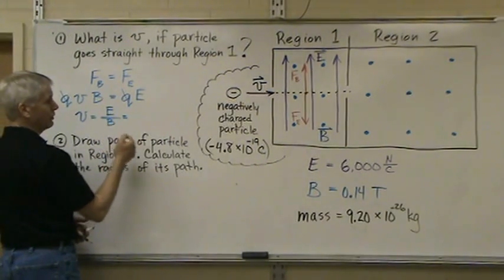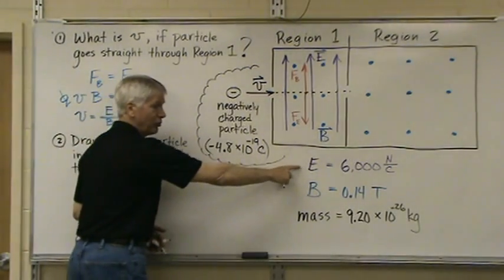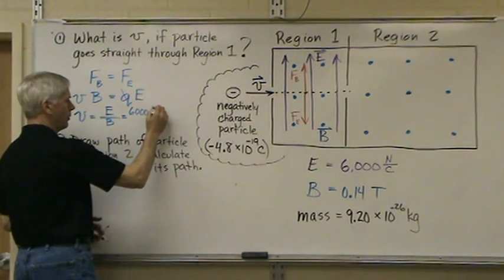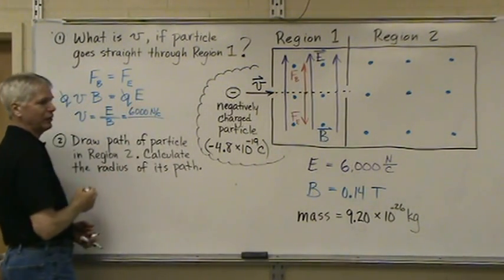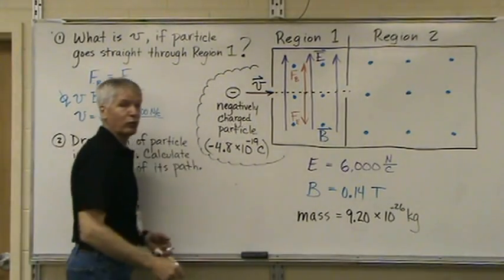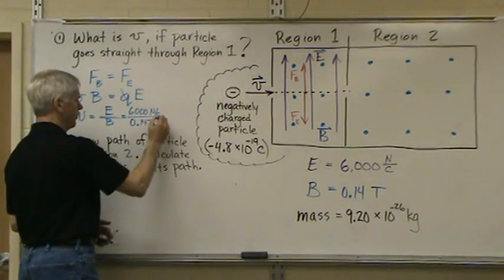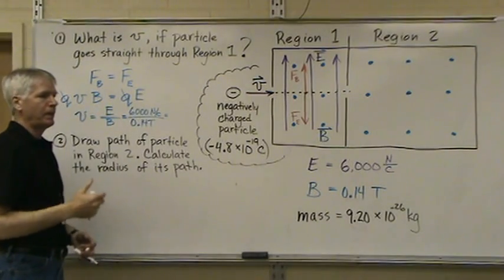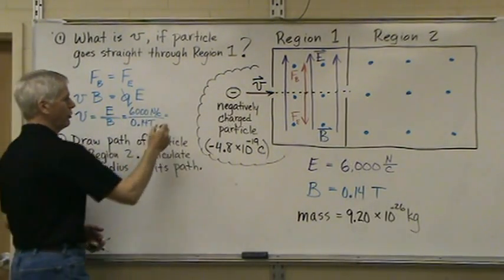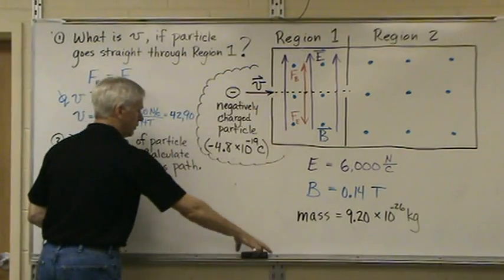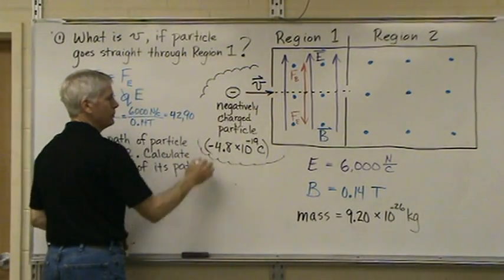The electric field is given here, 6,000 newtons per coulomb. The magnetic field is 0.14 tesla. So, that gives us a velocity of 42,900 meters per second.